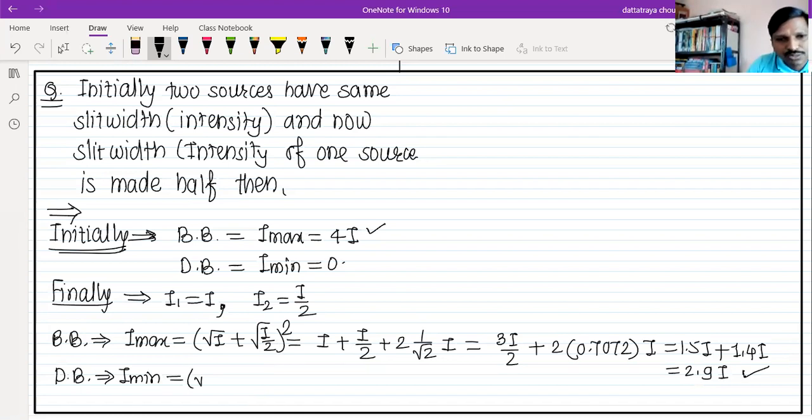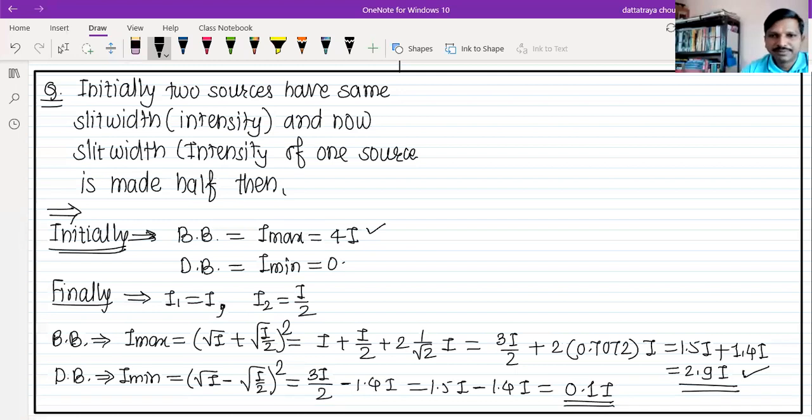Now dark bands, minimum intensity: (√I - √(I/2))². I plus I/2, first two terms give 3/2 I, minus 1.4I. 1.5I minus 1.4I, approximately 0.1I.